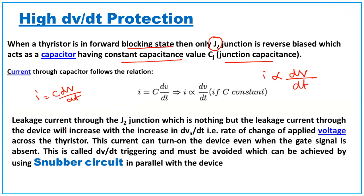The leakage current through junction J2 will increase with an increase in the anode-to-cathode voltage. The rate of change of applied voltage across the device increases means the leakage current also increases. This current can turn on the device even when the gate signal is absent, so the thyristor may unwantedly start conducting. This is called dv/dt triggering and must be avoided.